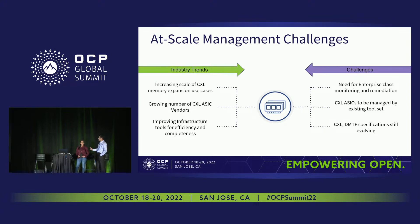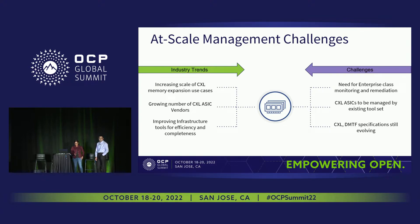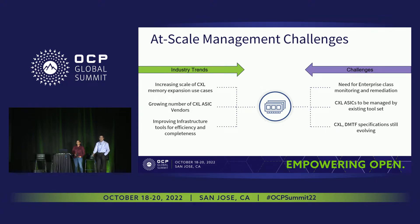Infrastructure tools have to cope with all those possibilities. Because of those trends, we need enterprise-class monitoring and remediation. Data center numbers are growing, the number of servers and CXL devices are growing, but our staff cannot grow at the same speed. CXL ASICs need to be managed by our existing toolset — we need to continue using our existing tools, perhaps adding some options and fields for CXL, but we do not want to adopt a totally new toolset.